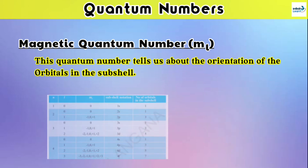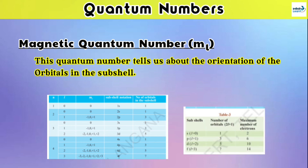Here is a table showing that each subshell holds as many electrons as twice the number of orbitals in the subshell. After this, one more table shows the maximum number of electrons that can be occupied by the different subshells.